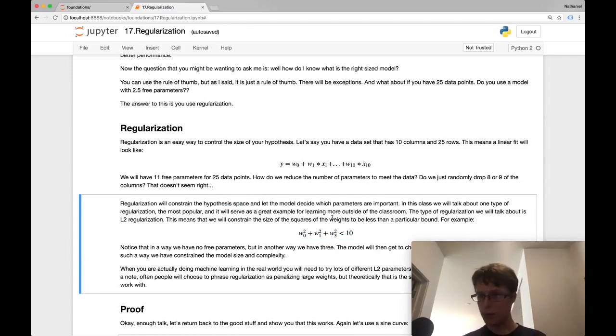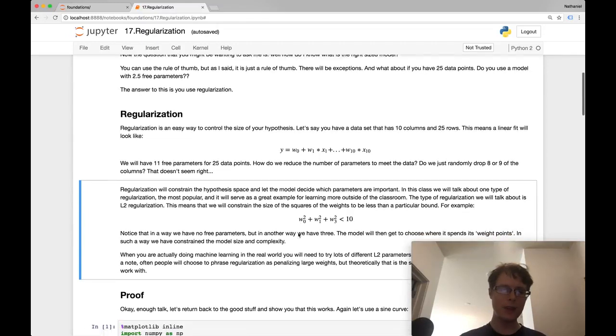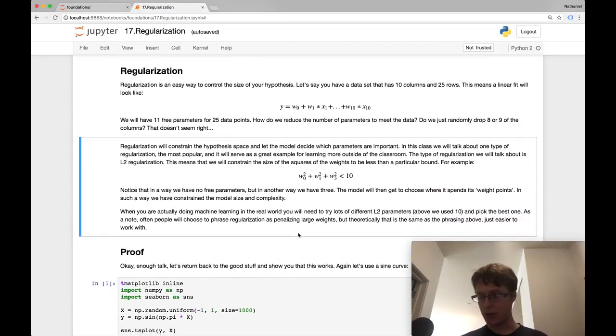This is what's called L2 regularization. This is generally what's used. This constrains the range of feasible models. Now we can only have models that have weights in a small range. These are still infinite parameters, but the parameters have been infinitely reduced in size.